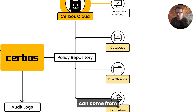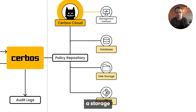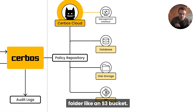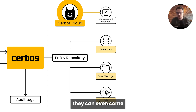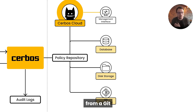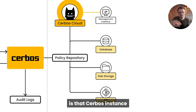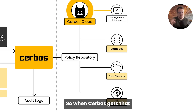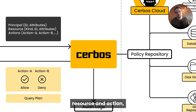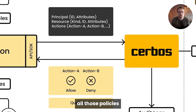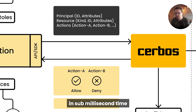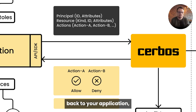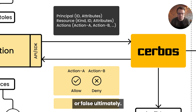And those policies can come from a storage folder, like an S3 bucket. They can come from disk. They can even come from a Git repository, which gives you a nice GitHub-style workflow. But the key thing here is that Cerbos instance loads in those policies. So when Cerbos gets that request of principal, resource, and action, Cerbos evaluates all those policies in sub-second time and returns back to your application a simple allow or deny decision, either a true or false, ultimately.